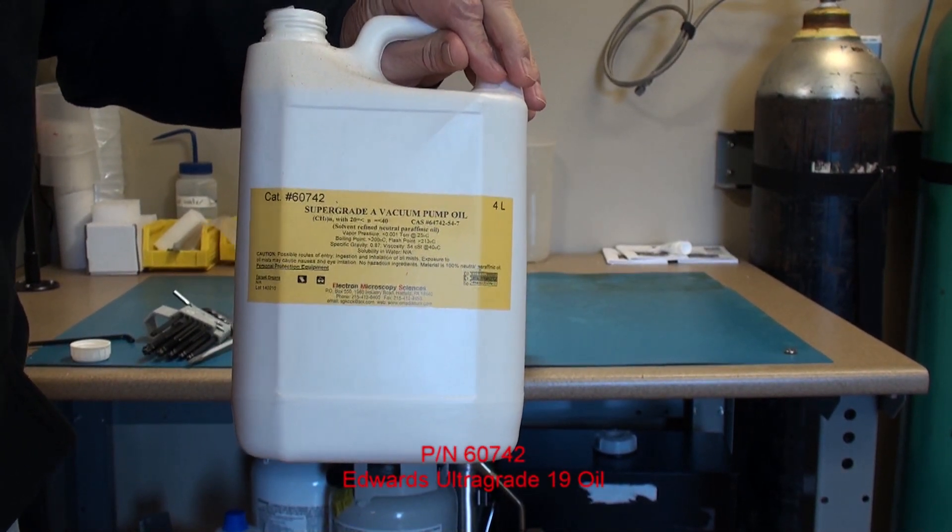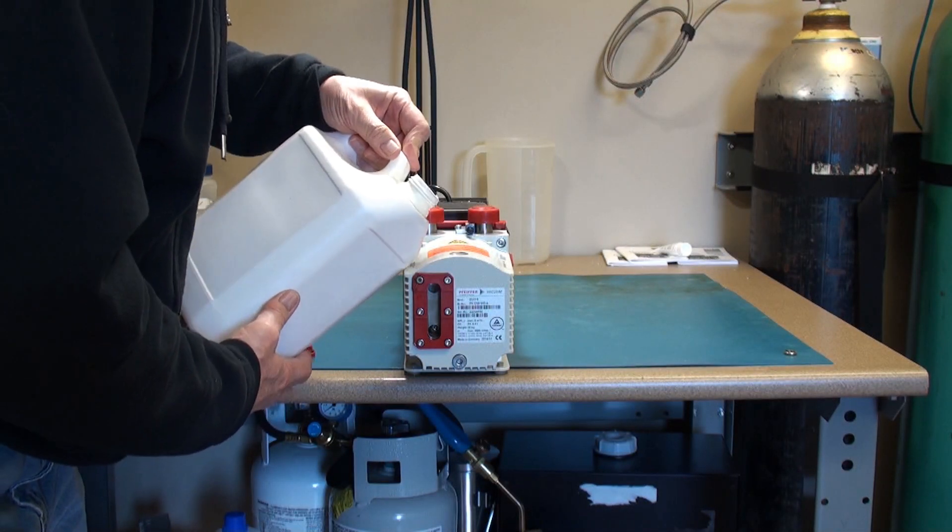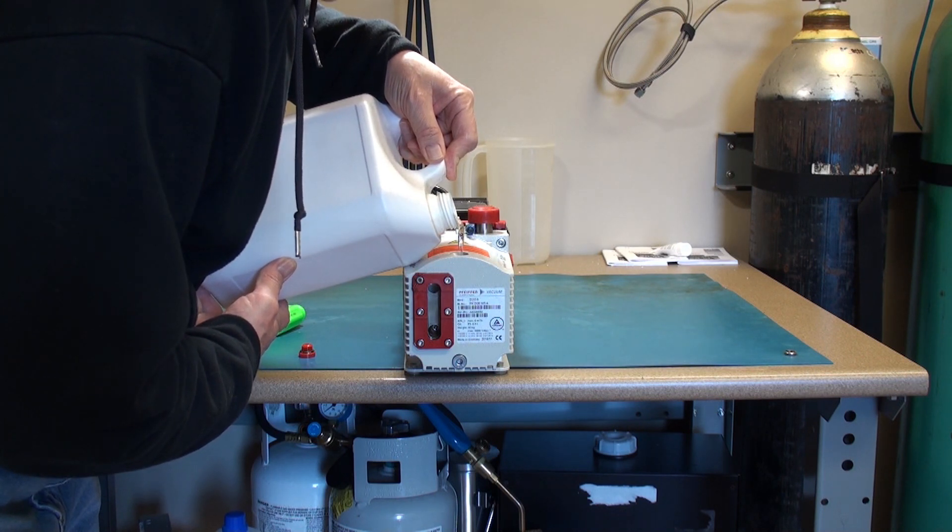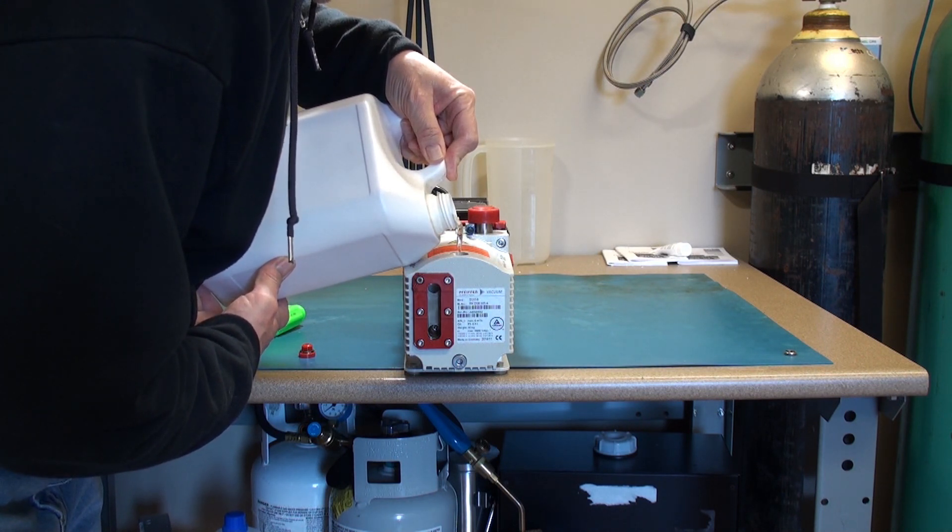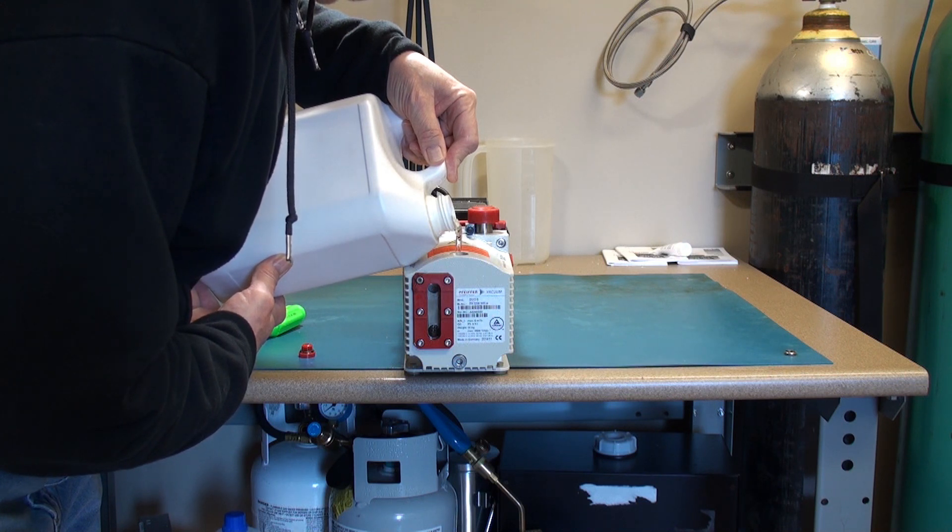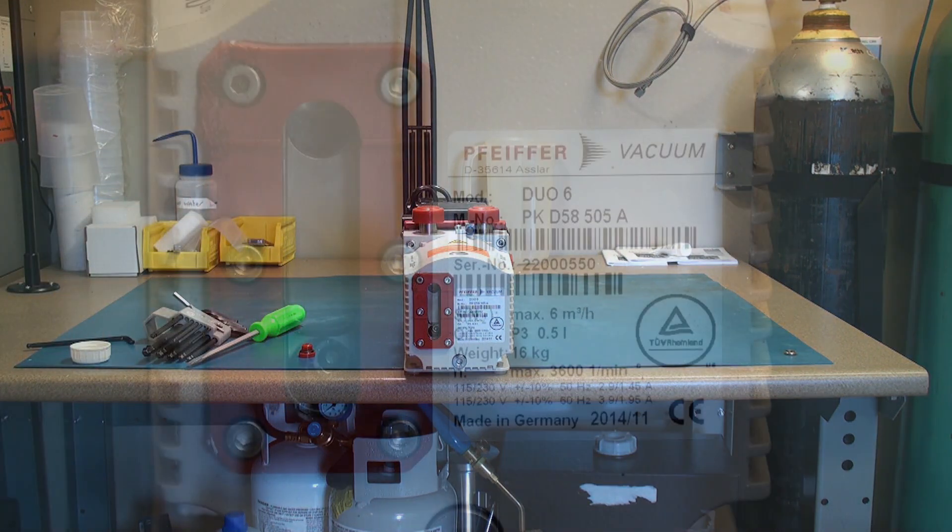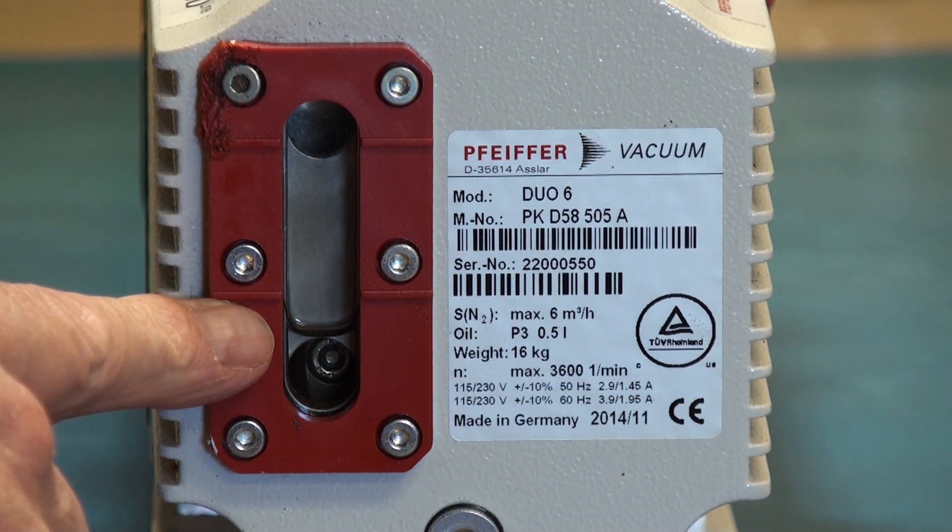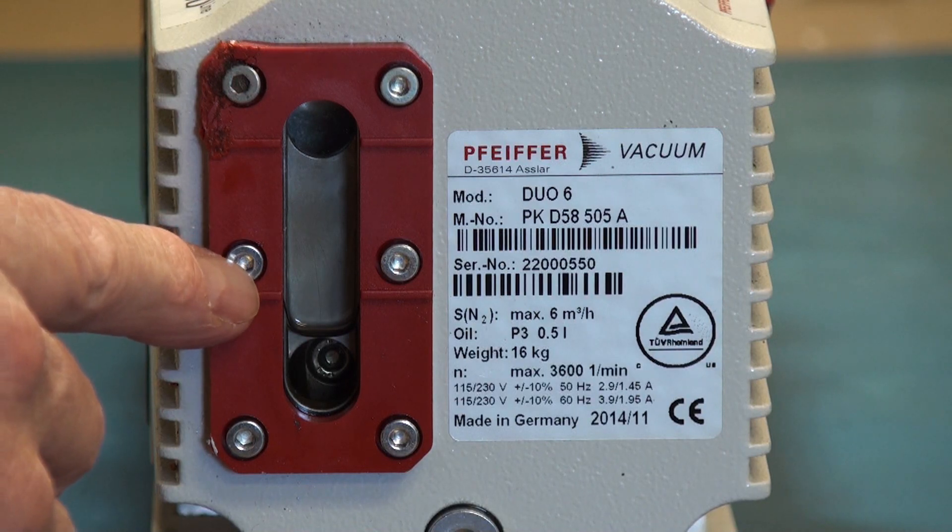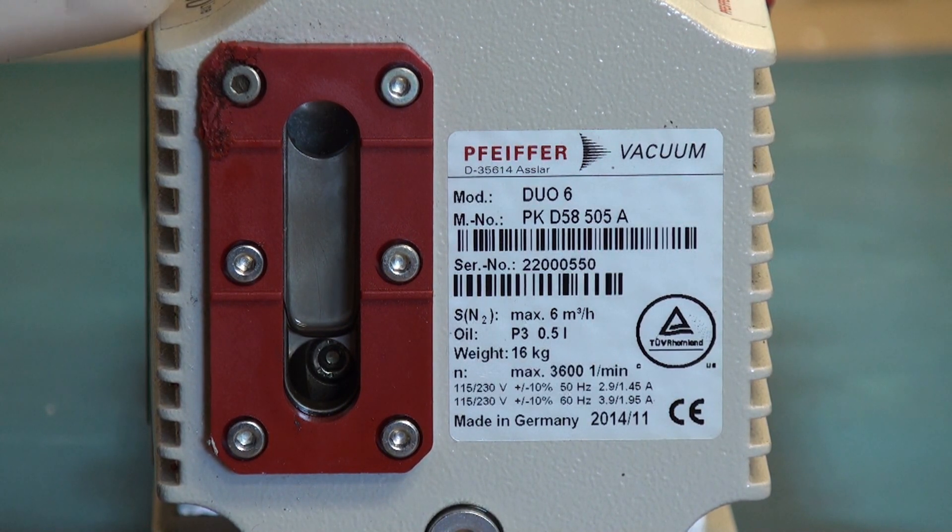Using the Super Grade 19 pump oil, which we sell, we will go ahead and carefully refill the pump. After pouring a little bit, you can see the meniscus of the oil in the sight glass come up. Generally I will raise it to about two thirds to three quarters of the way to the top of the boundary.